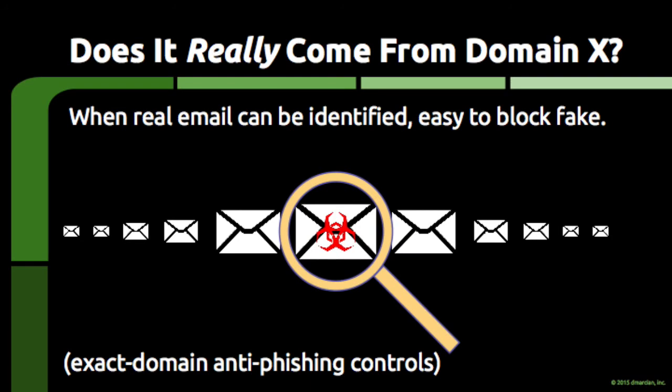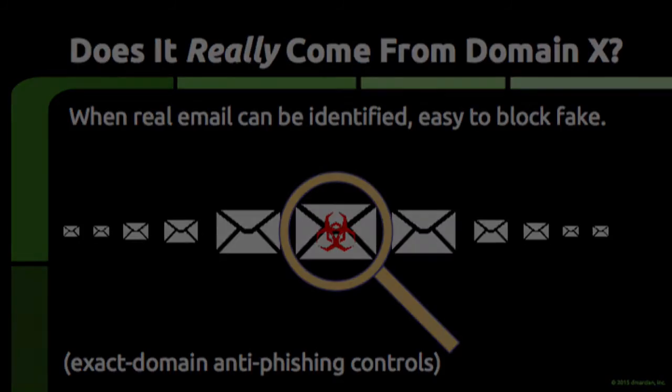DMARC's original use case was to fight phishing. If you deploy DMARC and make all of your legitimate email easy to identify, you can tell the world to reject email that purports to come from your domain but fails the DMARC check. Doing so effectively creates a domain-based channel that disallows unauthorized access. This is a powerful anti-phishing control and has been used to curb huge amounts of email-based fraud.